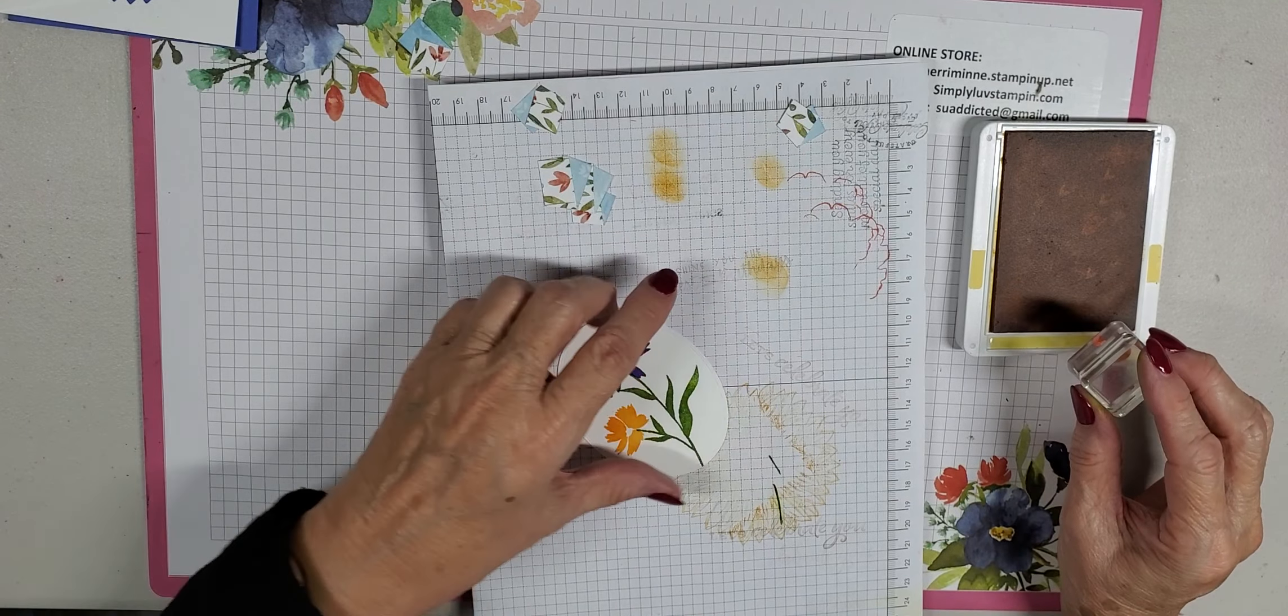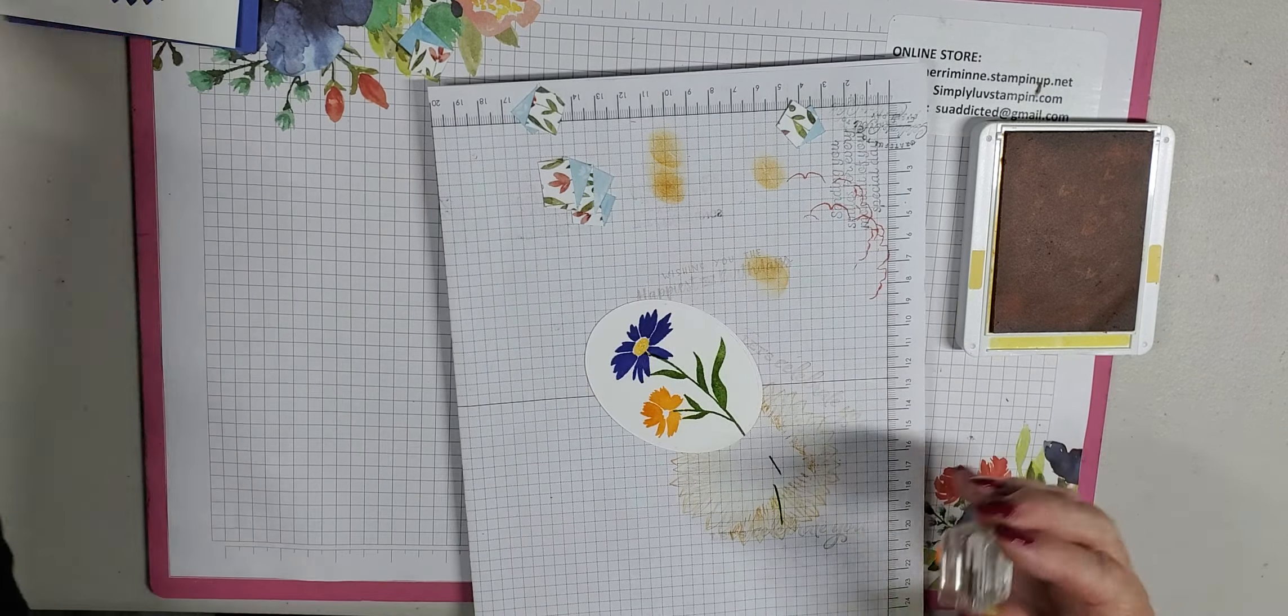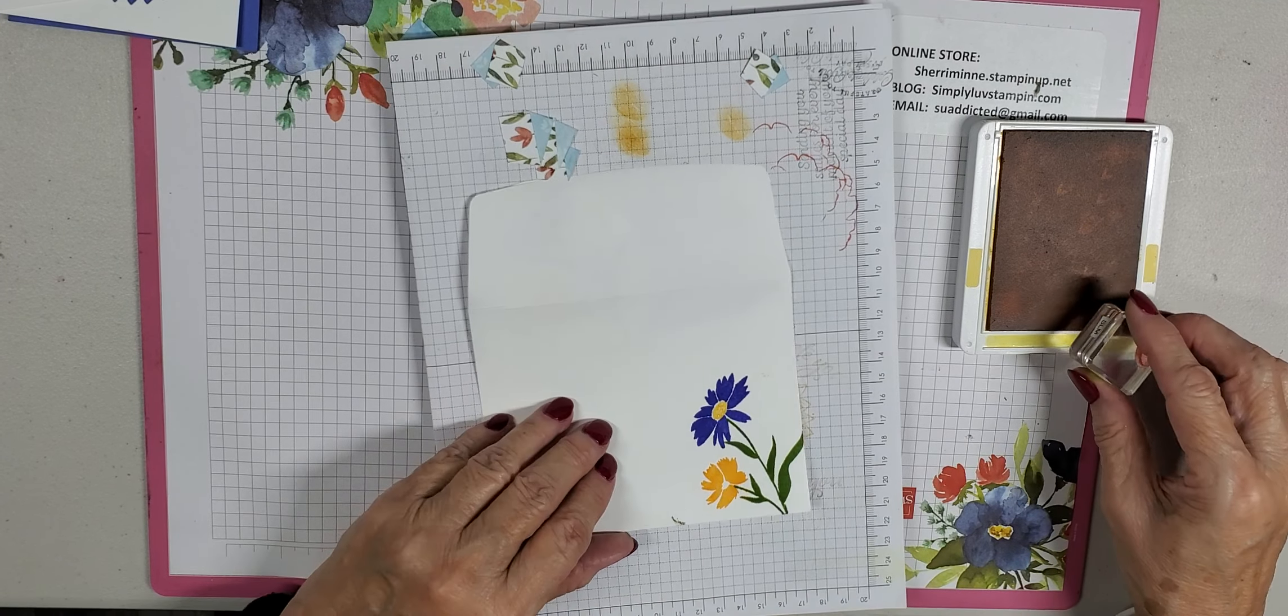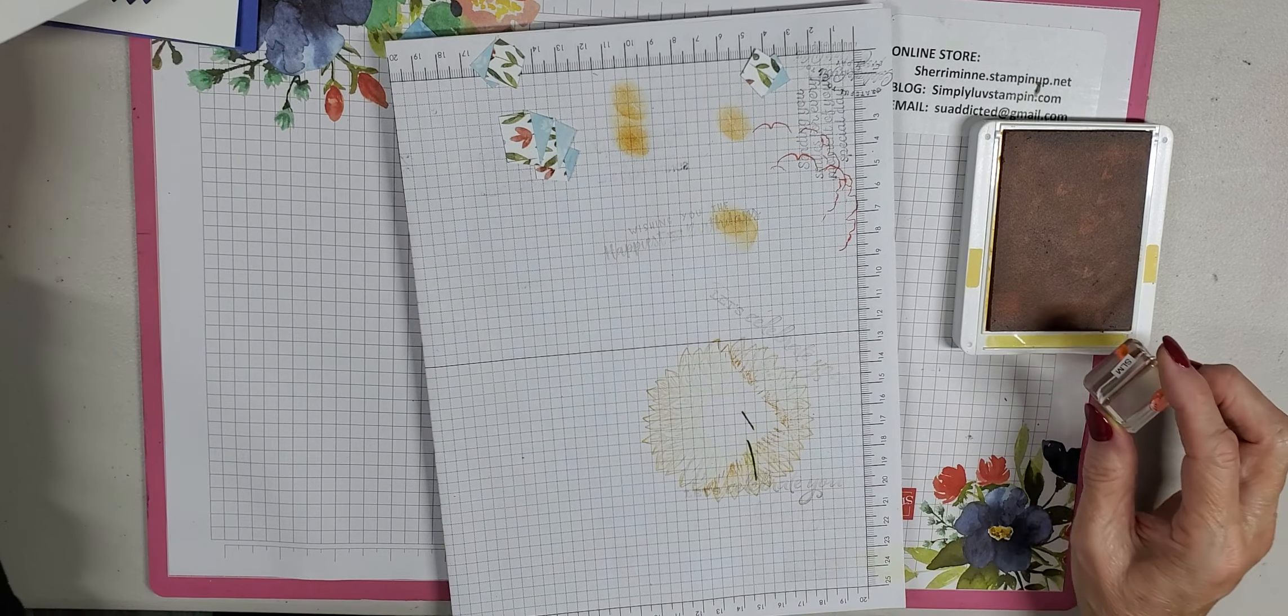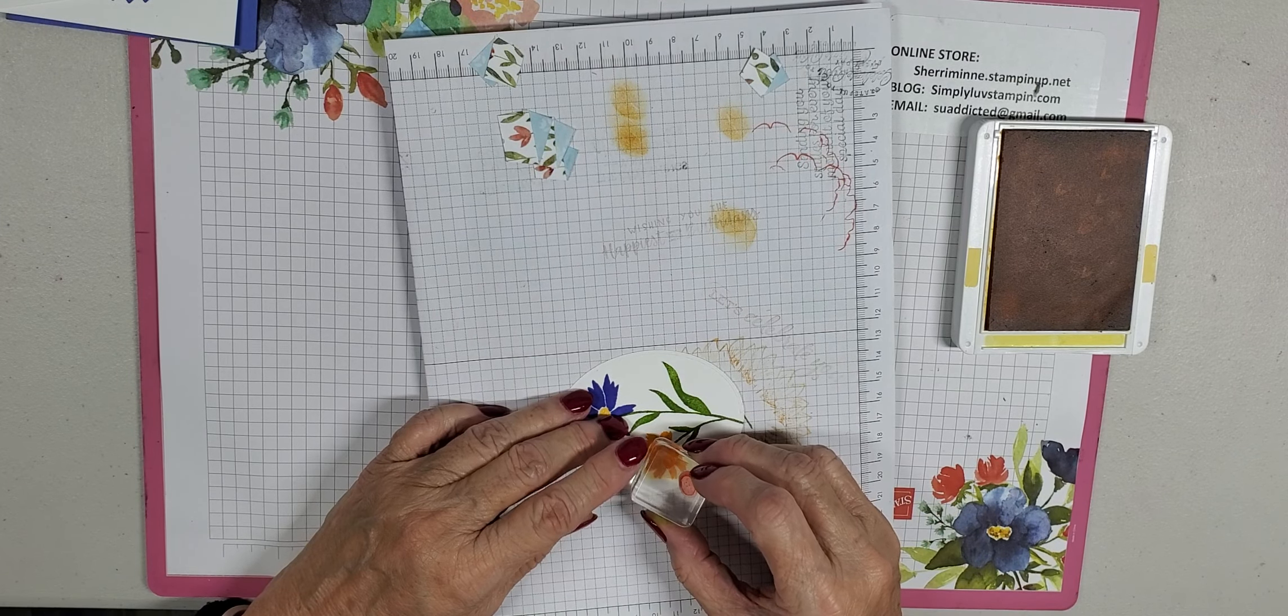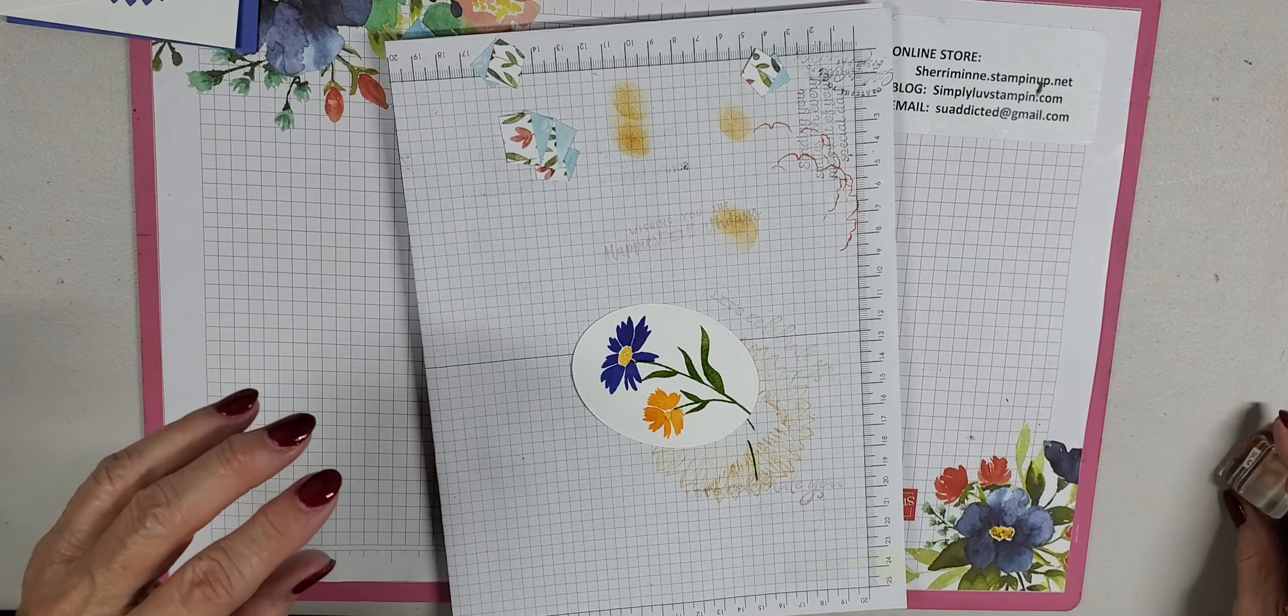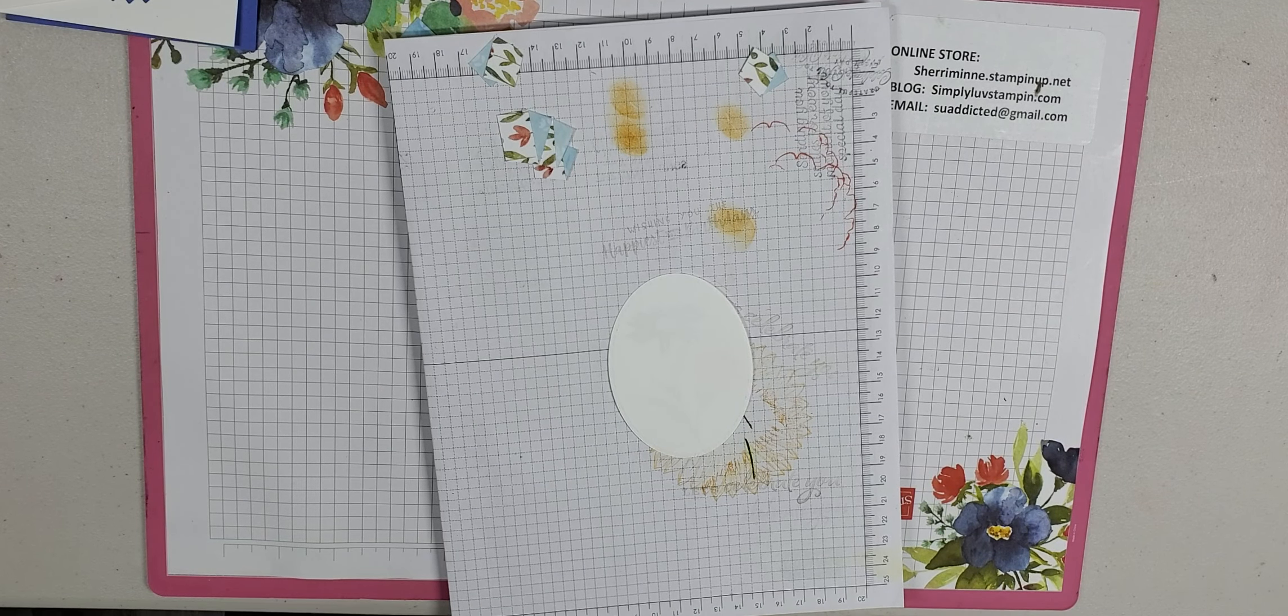And now the only thing we have left to do are the centers of our flowers. And that's going to be Daffodil Delight. We have a big one for the bigger flower. I'll do my envelope at the same time. And then we have a small one for our smaller flower. And I need a small one on my... there we go. I think we are done with stamping.